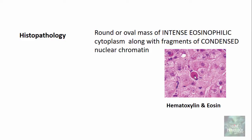This is a hematoxylin and eosin stain. If you have access to electron microscopy, you can even see the formation of cytoplasmic blebs and the apoptotic bodies as well. There are also special stains — the Feulgen and acridine orange stains — which can help in the diagnosis of apoptosis.